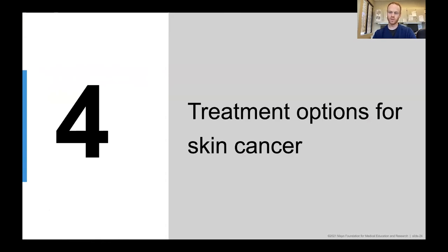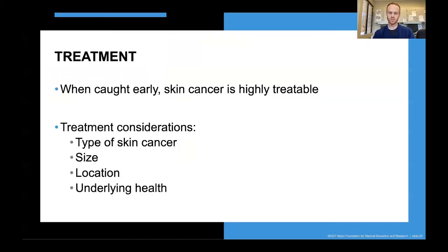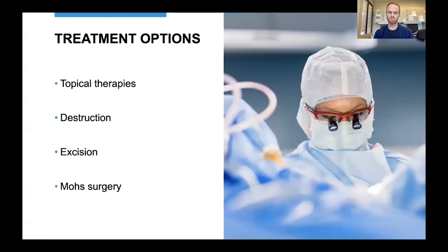That was a brief review of some common mimickers and other common skin growths. Now we'll turn back to skin cancer and discuss what treatment options are available. When caught early, skin cancer is very treatable. When we consider what treatment is most appropriate, we think about the type and subtype of skin cancer, how big it is, how deep it goes, where it is on the body — treating a skin cancer on the nose is different from on the back — and the underlying health of the patient. Treatment options can be broken into topical therapies, destructive methods, excision, or Mohs surgery.